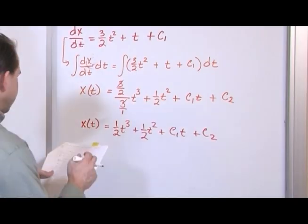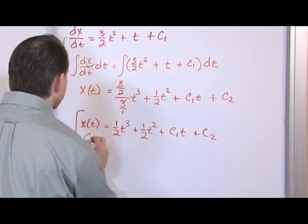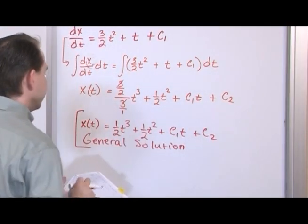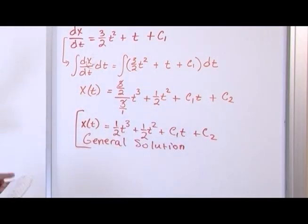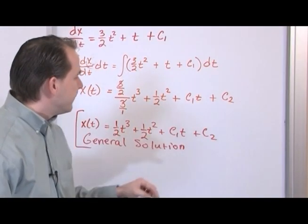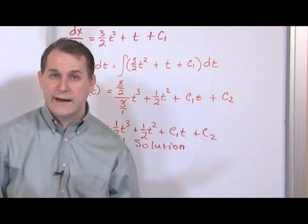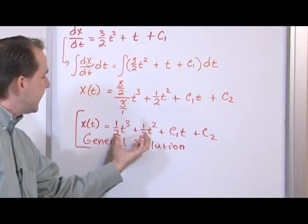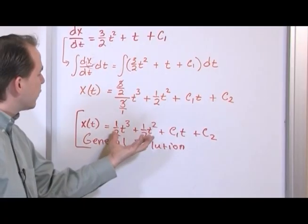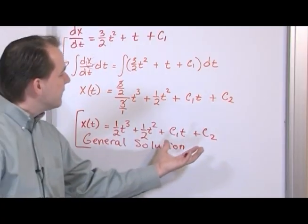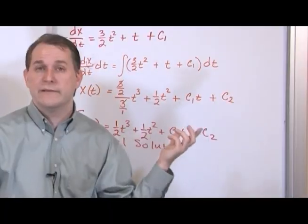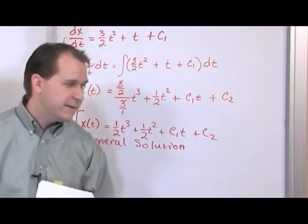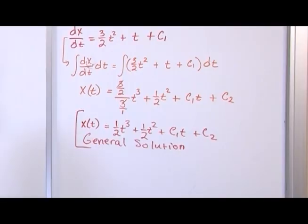That's the answer — this is the general solution. You just integrate as many times as you need. Notice there are two constants of integration, which means this is an infinite solution set — an infinite number of ways the solution can be constructed. They all have this general form. The initial conditions given in the problem will define what c₁ and c₂ are, and will define the specific solution.